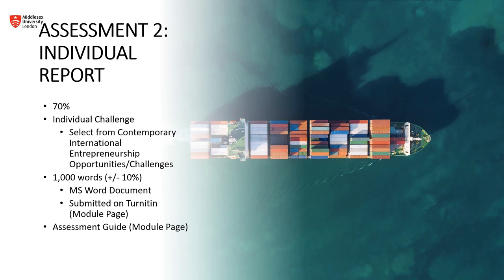Assessment two is the individual report, worth 70 percent of your overall grade. Each individual is responsible for submitting their own work. Assessment two also has an assessment guide with a full breakdown of all the information. Individuals will select from contemporary international entrepreneurship opportunities or challenges currently in the marketplace. The individual report will be 1,000 words plus or minus 10 percent, submitted as a Microsoft Word document on Turnitin on your module page.